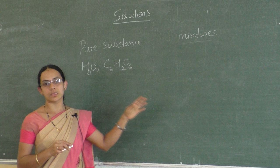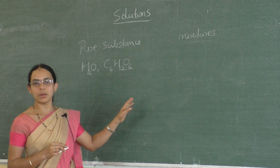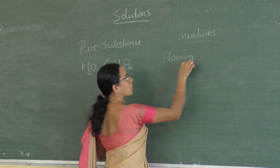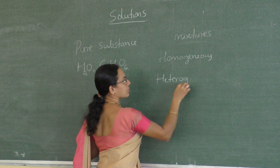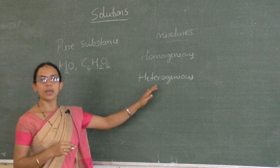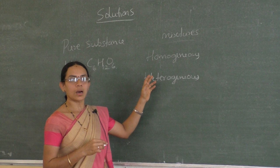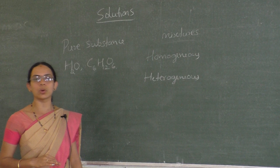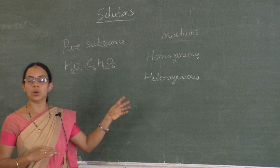Mixtures of salt and water, sugar and water can be separated by simple physical methods. In mixtures, there are two types: homogeneous mixtures and heterogeneous mixtures. In homogeneous mixtures, the components are completely mixed with each other and the concentration is uniform throughout the mixture. Whereas in heterogeneous mixture, the components do not mix completely and the concentration is not uniform throughout.